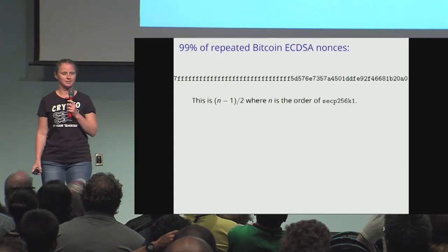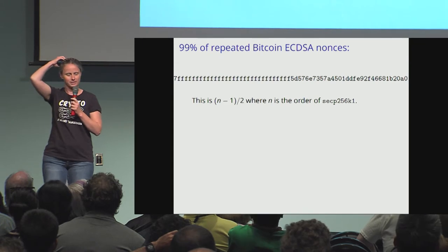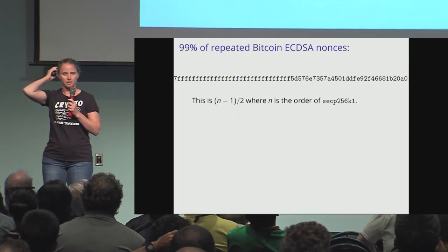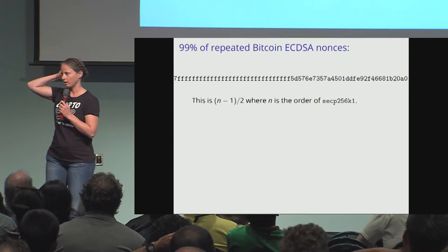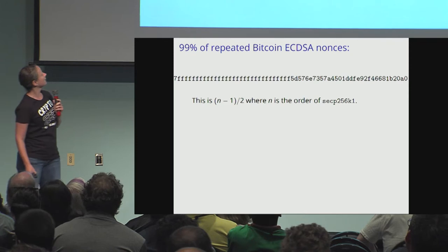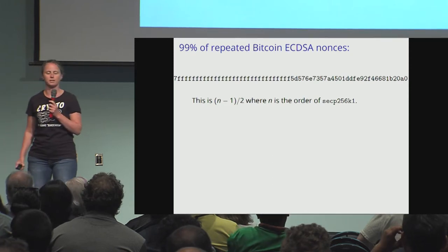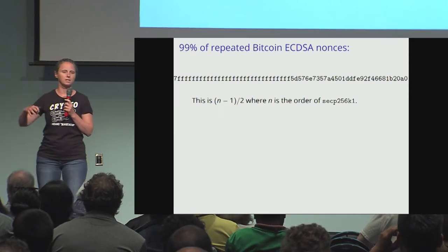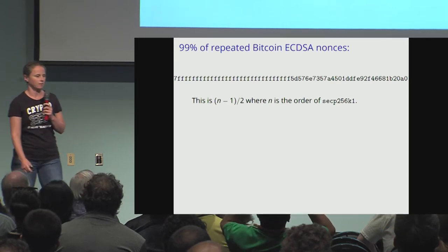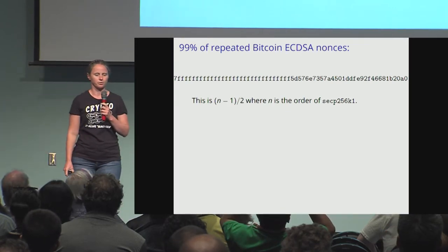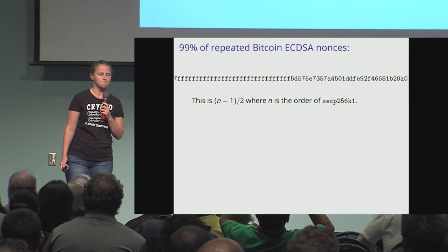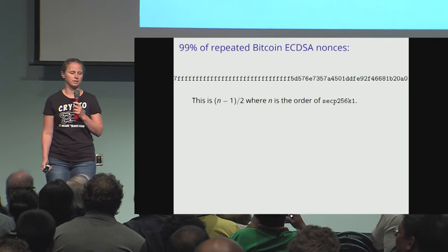As a side effect of a paper that I was working on recently, we ended up looking for colliding ECDSA nonces in the Bitcoin blockchain. If you do this, you notice that 99% of the repeated ECDSA nonces — which gives you the private key — are this value, which happens to be n minus 1 over 2, where n is the order of the elliptic curve used for Bitcoin.